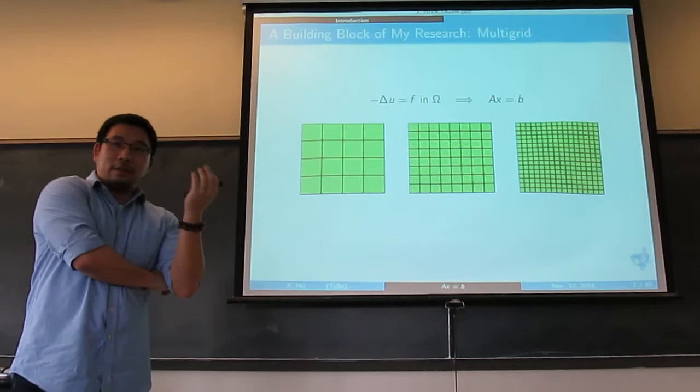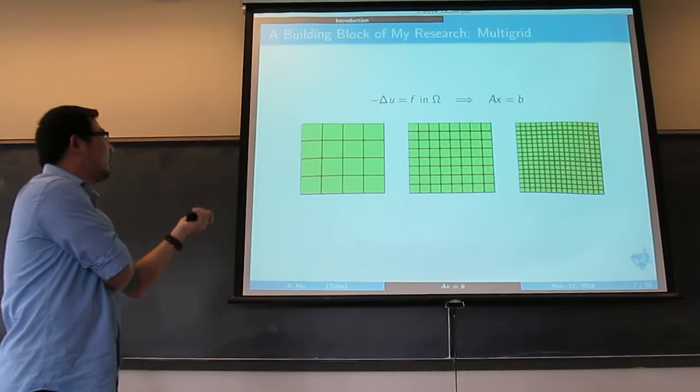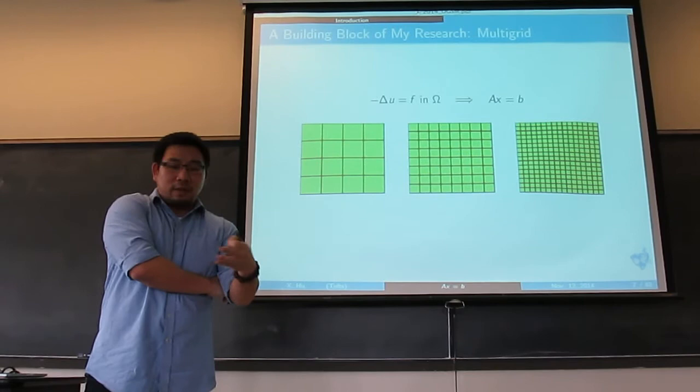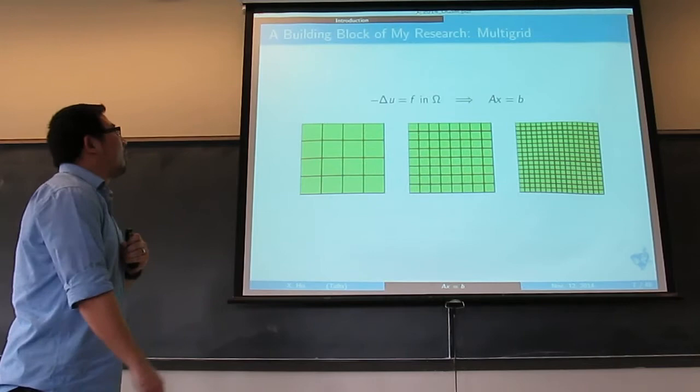Let's look at the Poisson equation: Laplacian U equals F, solved in a two-dimensional domain — just a unit square. After you discretize it — using finite difference, finite volume, finite element, whatever you want — you end up with a linear system Ax = b.